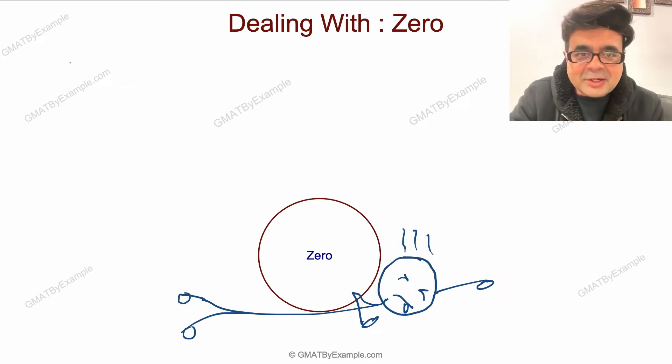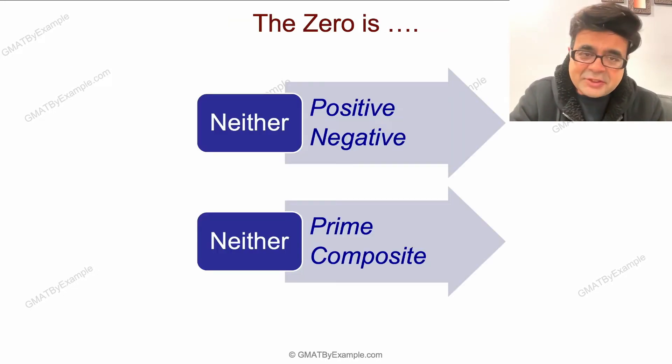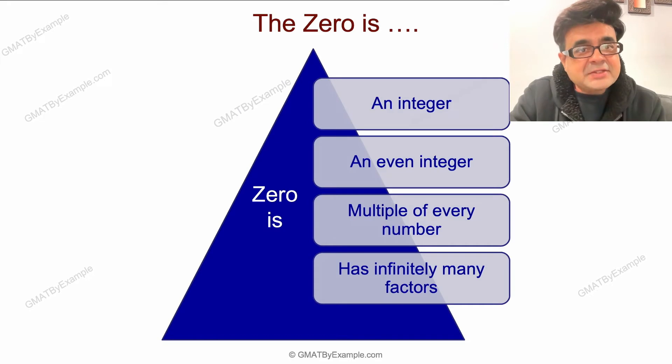Let's get started with some properties of zero. Zero is neither positive nor negative. Zero is also neither prime nor composite. Zero is an integer; it is also an even integer. So zero, two, four, six, eight are all even.